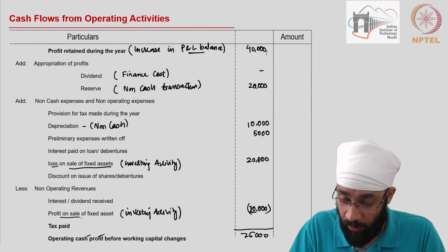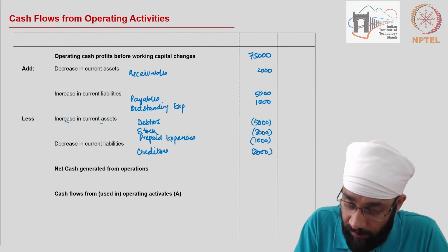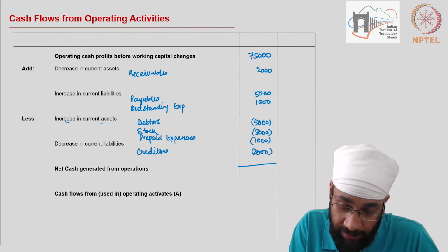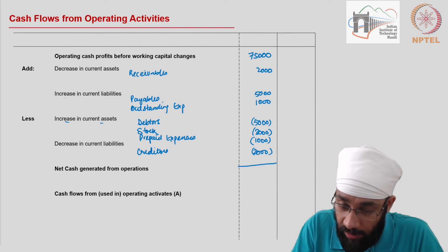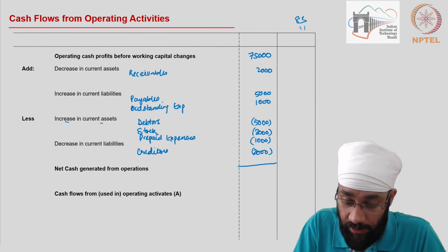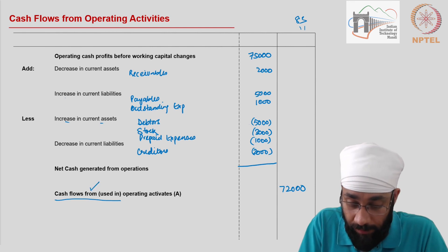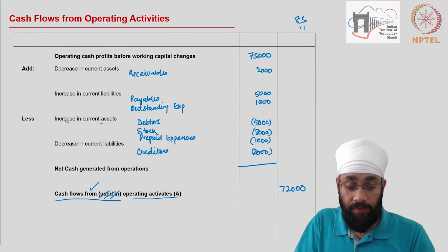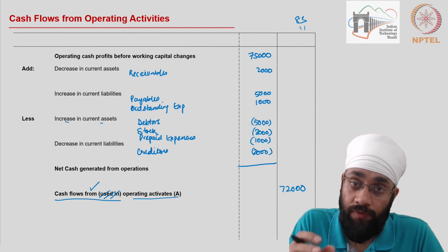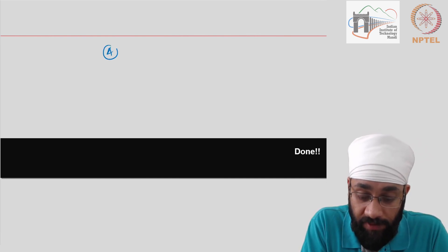The operating cash profit before working capital changes from the previous section was 75,000. After adding and deducting the working capital changes, the total outflows are 11,000 and we deduct that, giving us 72,000 — wait, let me verify: 75,000 minus 11,000 gives 72,000. So 72,000 is the cash flows from operating activities. This is a positive number, so we do not need to show it in parentheses.